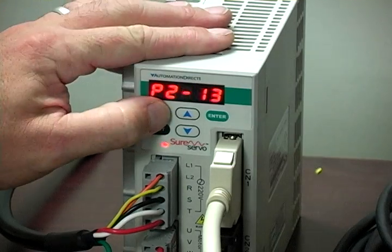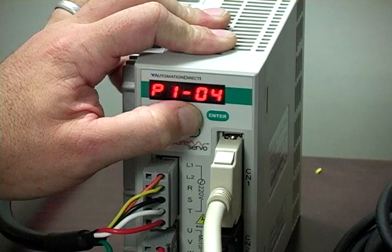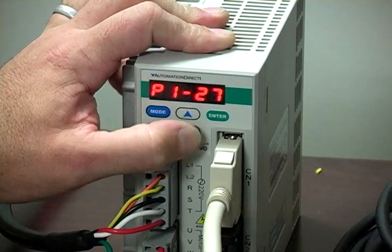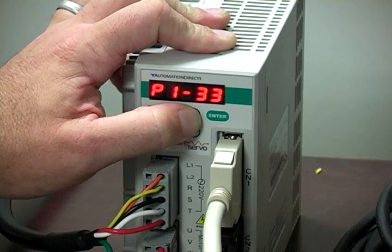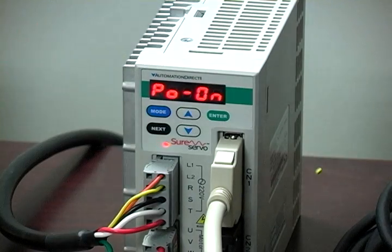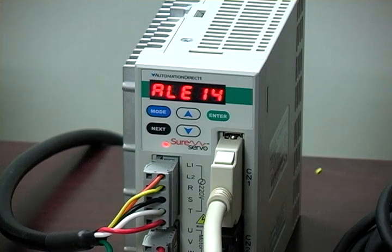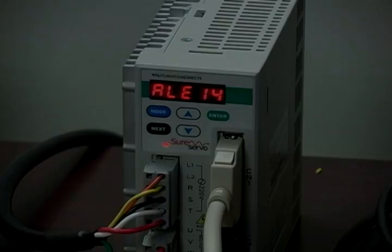Parameter P133 selects incremental or absolute position mode. Enter a value of 0 for absolute mode or enter 1 for incremental mode. We'll start with 1 for incremental or relative moves. Remember to cycle power to the drive after configuring the drive I.O. so that your changes will take effect.